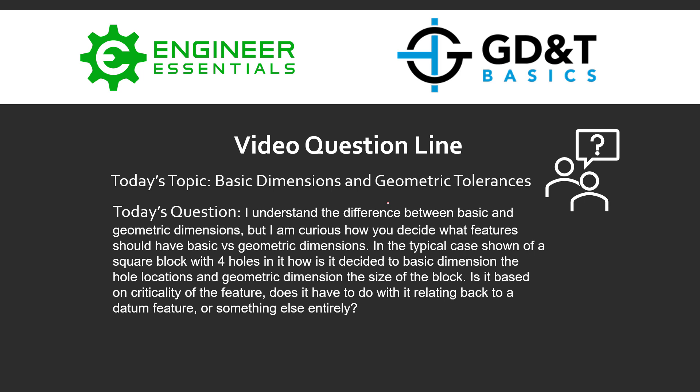The question submitted was: I understand the difference between basic and geometric dimensions, but I'm curious how you decide what features should have basic versus geometric dimensions. In the typical case shown of the square block with four holes in it, how is it decided to basic dimension the hole locations and geometric dimension the size of the block? Is it based on criticality of the feature? Does it have to do with relating back to a datum feature? Or is it something else entirely?